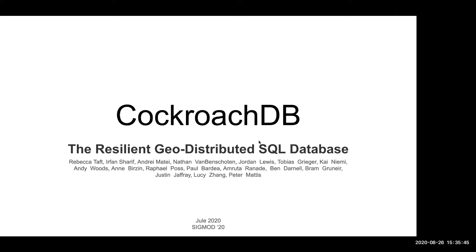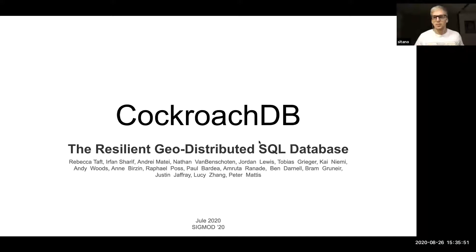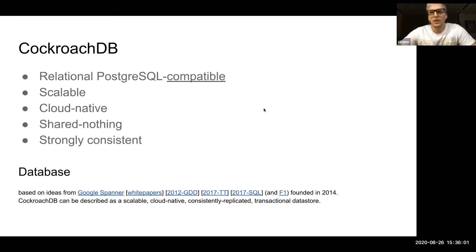Let's get started. We are going to talk about CockroachDB, the Resilient Geo-Distributed SQL Database. CockroachDB is a relational, Postgres-compatible, scalable, cloud-native, shared-nothing, strongly consistent database system founded in 2014 and derived ideas from Spanner and F1.